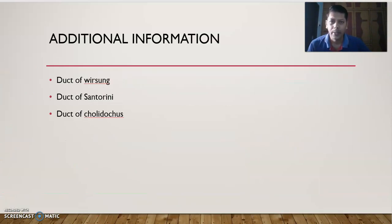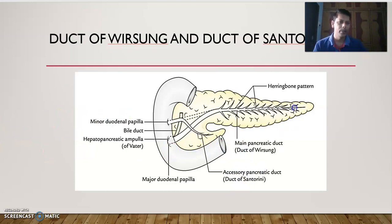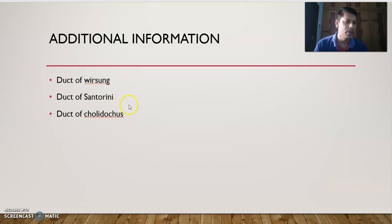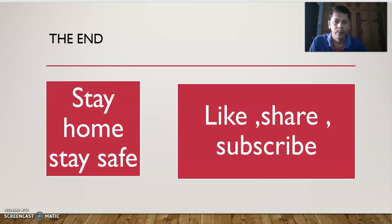Additional information: the duct of Virsa is the main pancreatic duct. The duct of Santorini is the accessory pancreatic duct — a smaller, additional duct. The duct of Choledochus is the common bile duct. These are not given in the textbook but are very important.